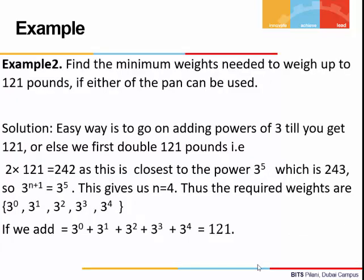Let's see more examples. Find the minimum weights needed to weigh up to 121 pounds if either pan can be used. We double 121 to get 242, which is less than or equal to 3 to the power 5 (which is 243). So 3 to the power n+1 equals 3 to the power 5, giving n equals 4. The required weights are 3 to the power 0, 3 to the power 1, 3 to the power 2, 3 to the power 3, and 3 to the power 4. Adding all these weights gives us 121 pounds.